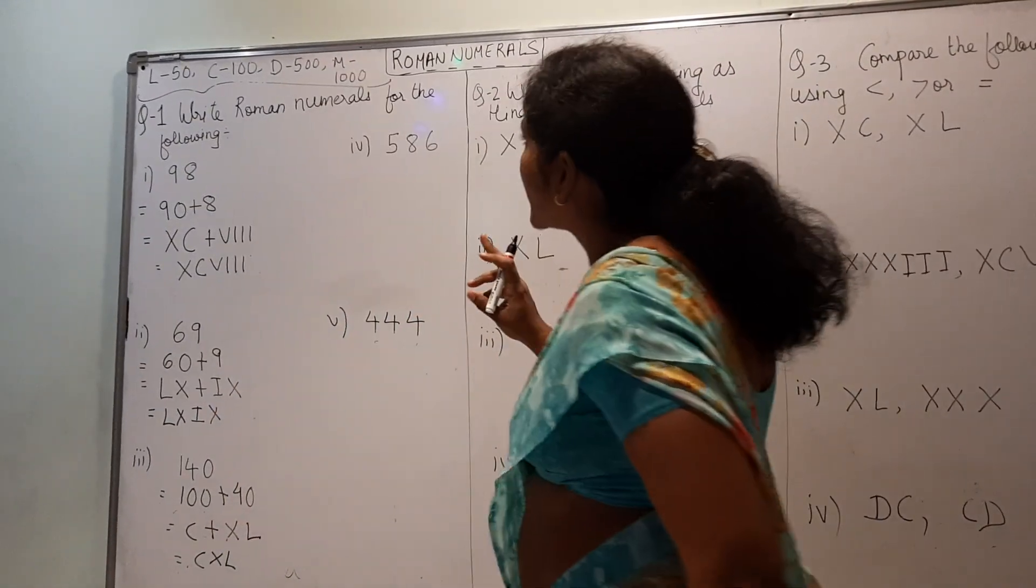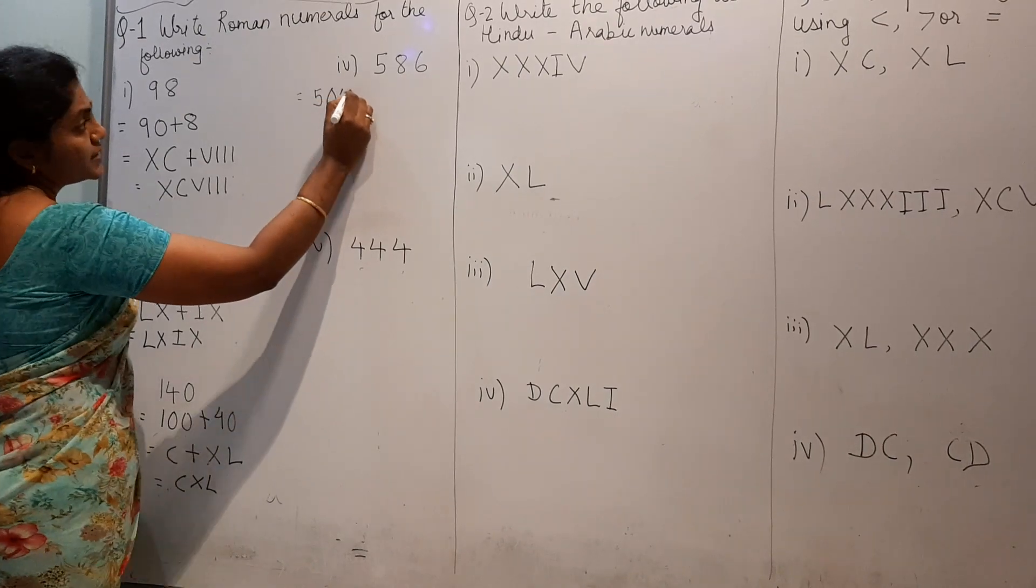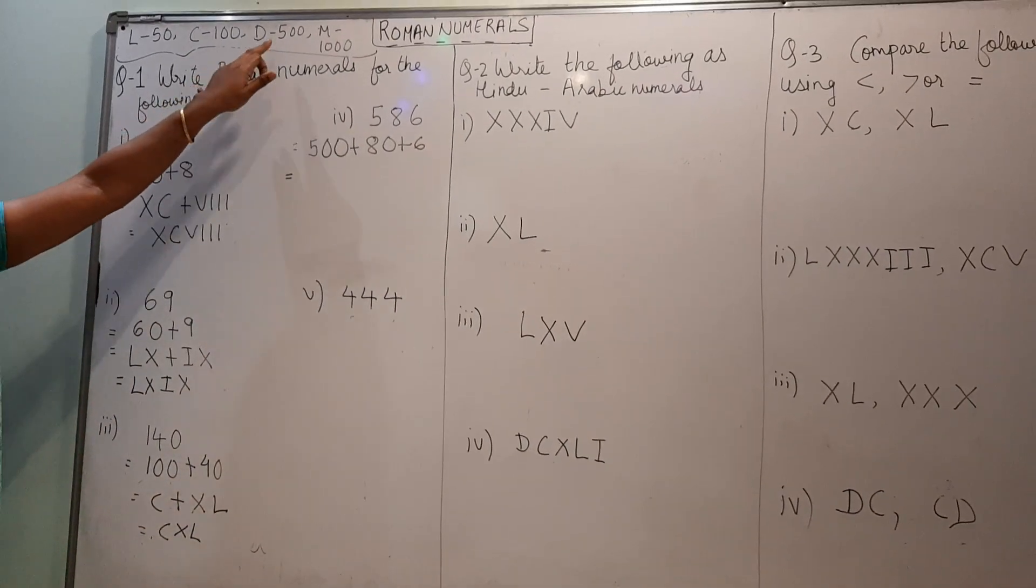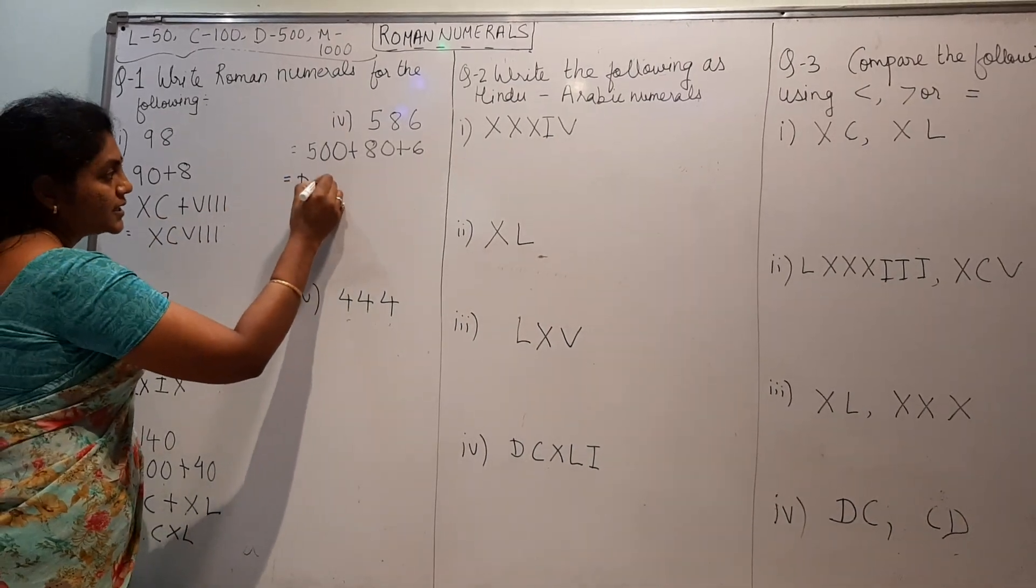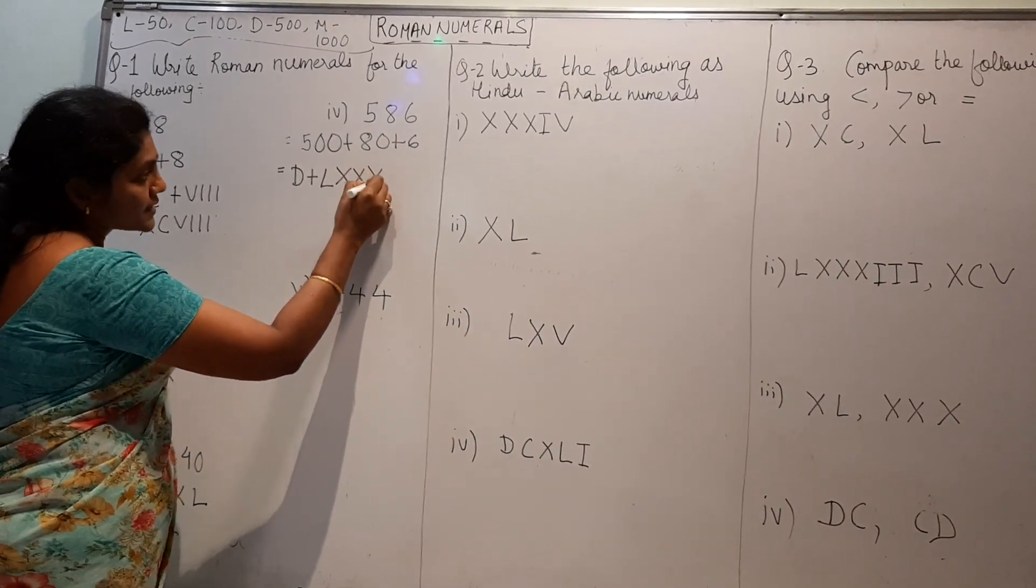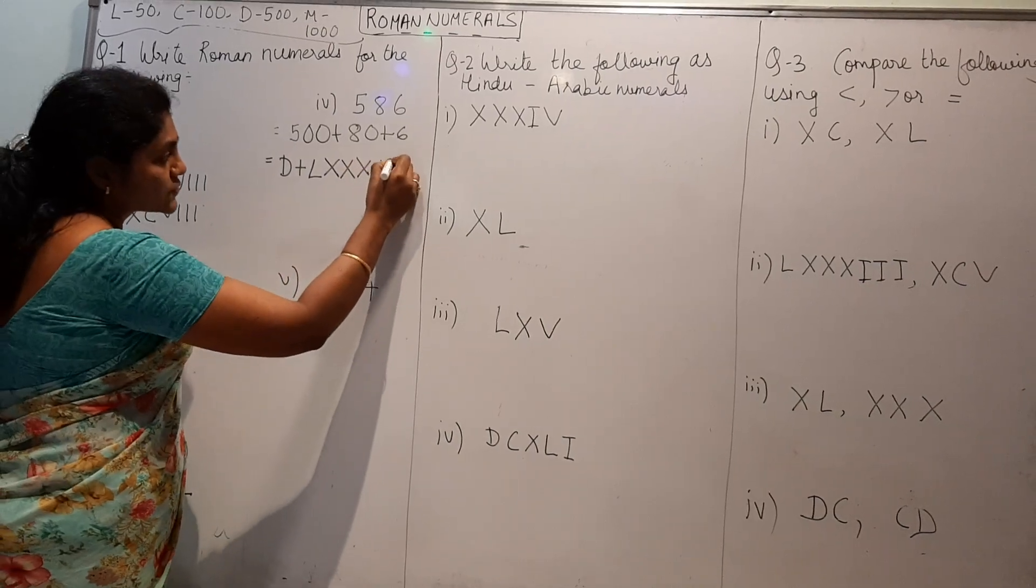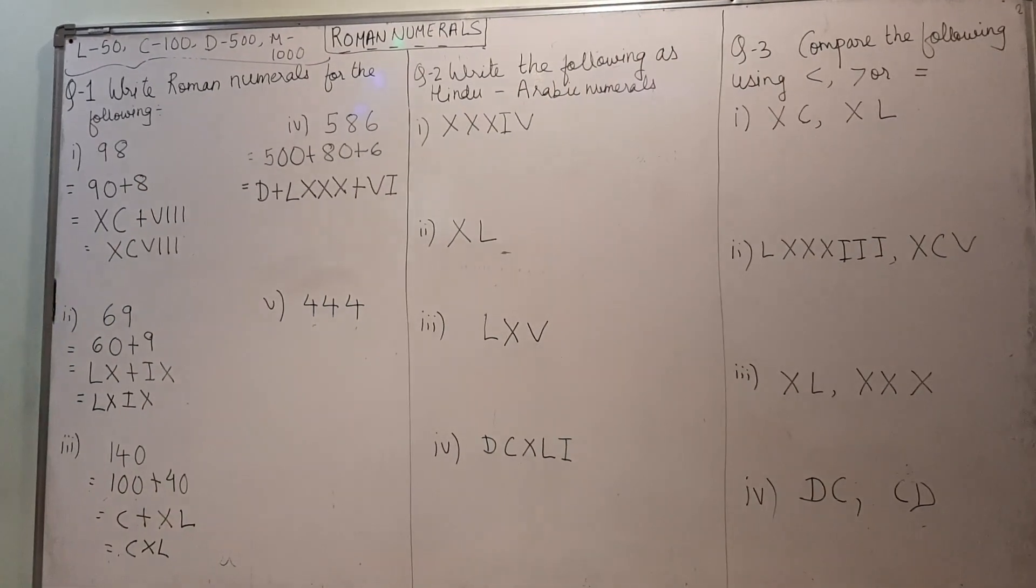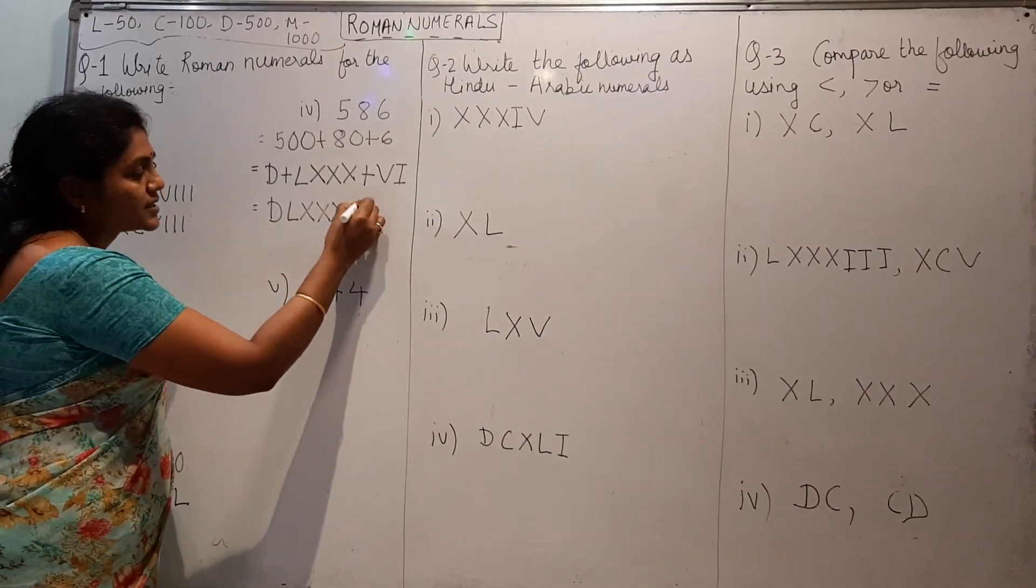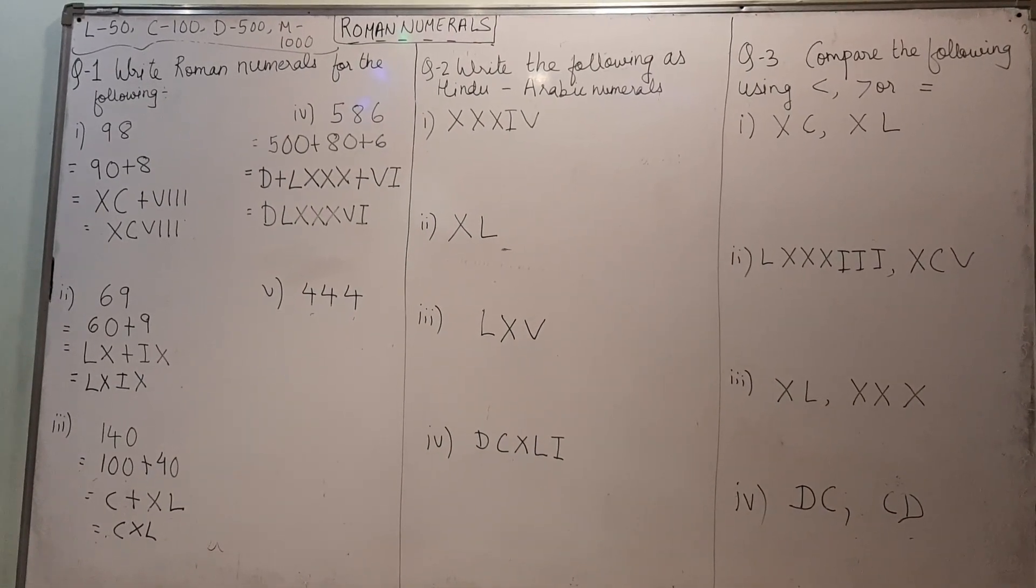Now, it is 586. Again, split. This will be 500 plus 80 plus 6. 500 is represented by D. So, this will be D plus 80. 80 means L, X, X, X. 50, 60, 70, 80. 6 is VI. Now, combine all these things. This is DLXXXVI. This is the roman numeral for 586.